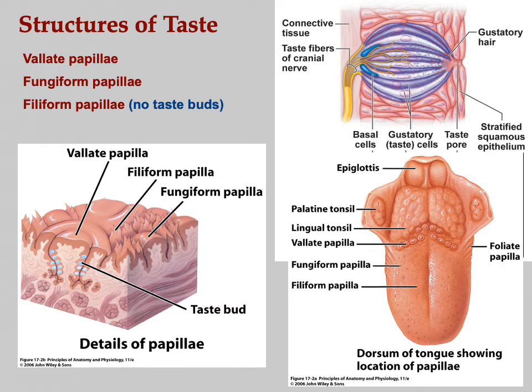On the tongue you have papillae — plural; papilla — singular. The Latin root word means 'nipple,' so these are little nipple-like structures. The vallate papillae are at the very back; they look like big flying saucers or sombreros, and they have a lot of taste buds — something like a hundred. Fungiform means 'shaped like a mushroom'; those are all over the rest of the tongue surface and have a handful of taste buds.